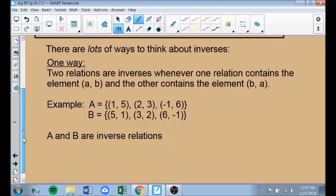There are a lot of ways to think about inverses. I'm going to cover 4. One way is that two relations are inverses when one relation contains the elements of the other, but they've been switched. So if something has the point AB, the other one has the point BA. For example, A has these points, B has these points. A and B are inverses of each other because 1, 5 became 5, 1, 2, 3 became 3, 2, and negative 1, 6 became 6, negative 1.